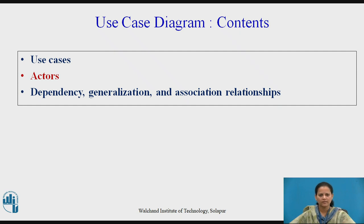Number one: to model the context of a system. Modeling the context of a system involves drawing a line around the whole system and asserting which actors lie outside the system and interact with it. Here, we apply use case diagrams to specify the actors and the meaning of their roles. Number two: to model the requirements of a system. Modeling the requirements involves specifying what that system should do from a point of view outside the system, independent of how that system should do it. Here, we apply use case diagrams to specify the desired behavior of the system. In this manner, a use case diagram lets you view the whole system as a black box — we can see what is outside the system and how it reacts to things outside, but not how that system works from the inside.